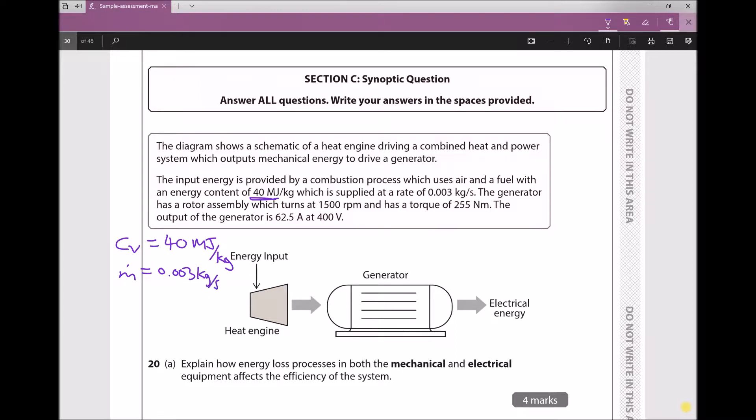So every second, 0.003 kilograms of that fuel are being supplied to the combustion process. What we'll be able to work out eventually is how much heat energy is being supplied every second, and the symbol we use for that is Φ. It goes on to say that the generator has a rotor assembly which turns at 1500 RPM, so our rotational speed is 1500 RPM, and has a torque T of 255 Newton meters.